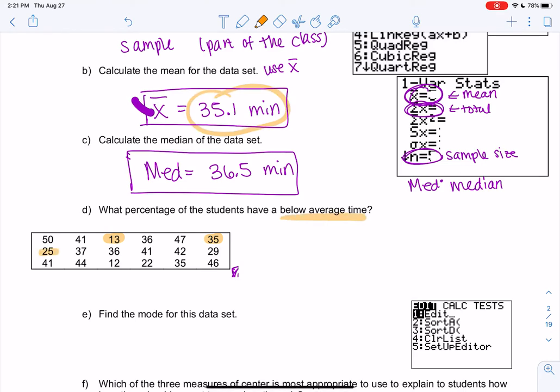25 is lower, 29 is lower, those are above. 12 is lower, and then 22 and 35. So we're going below 35.1.